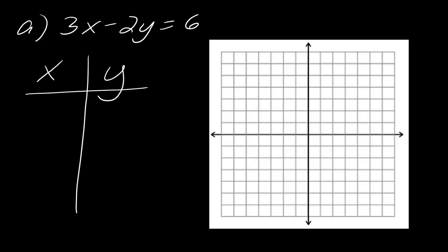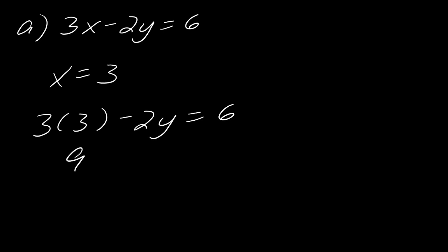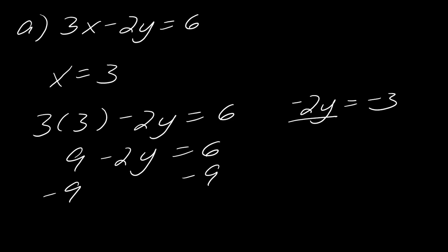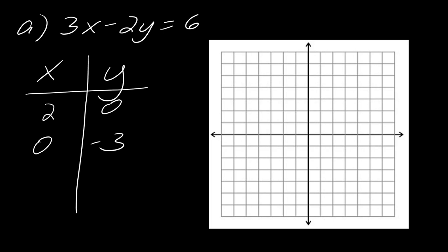Now I want to graph this and I still have to find a third point. We had (2, 0) and (0, negative 3). I can choose any x value I want. Let's do x equals 3. So 3 times 3 minus 2y equals 6; that gives 9 minus 2y equals 6. Subtract 9 to get negative 2y equals negative 3, then divide both sides by negative 2 and we get y equals 3/2, which is 1.5. So we found the point (3, 1.5).